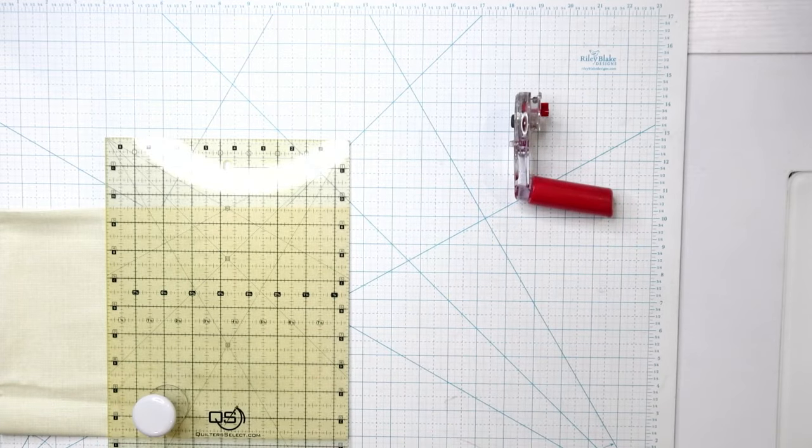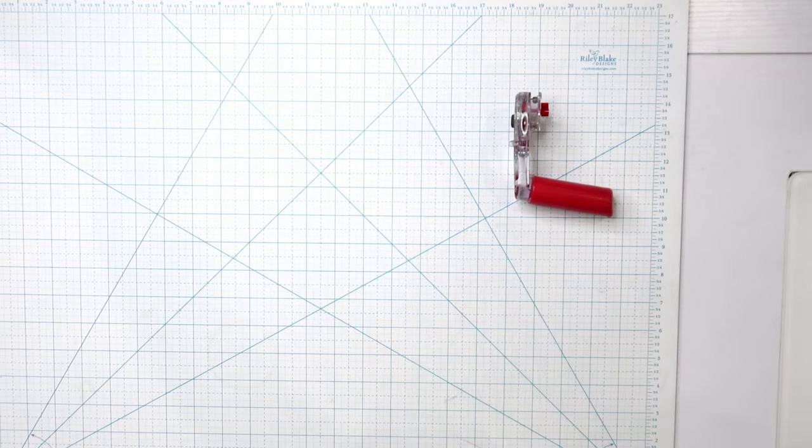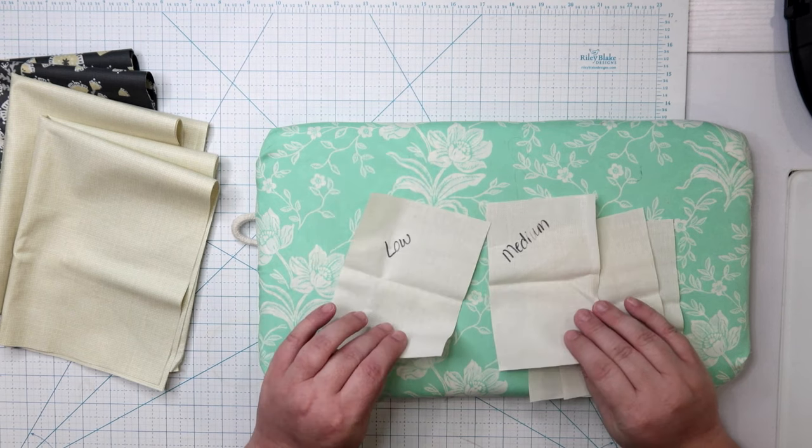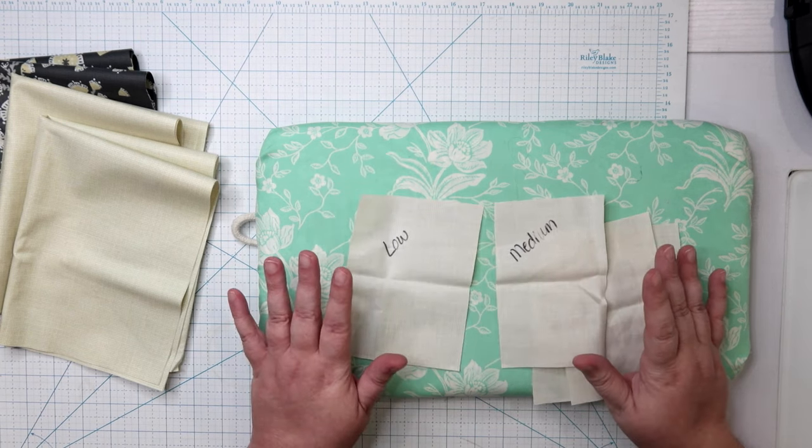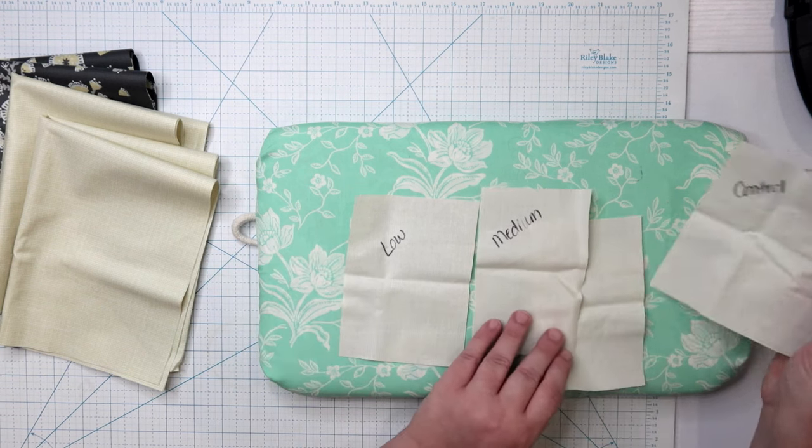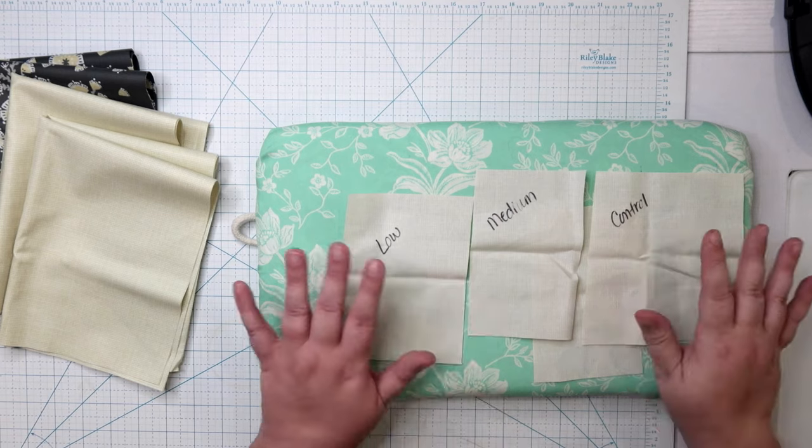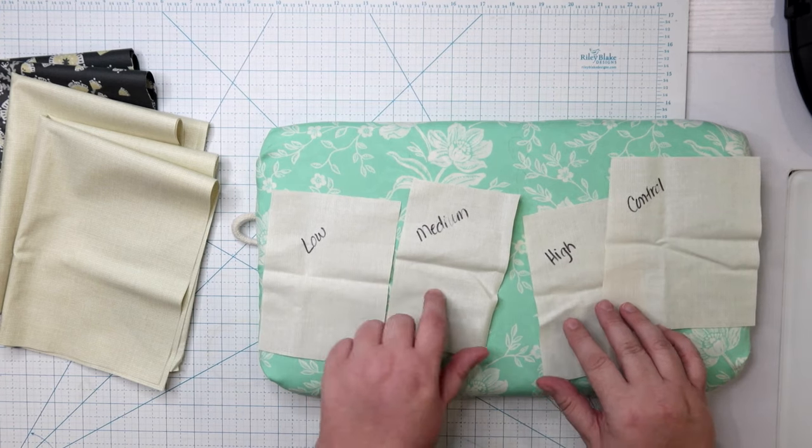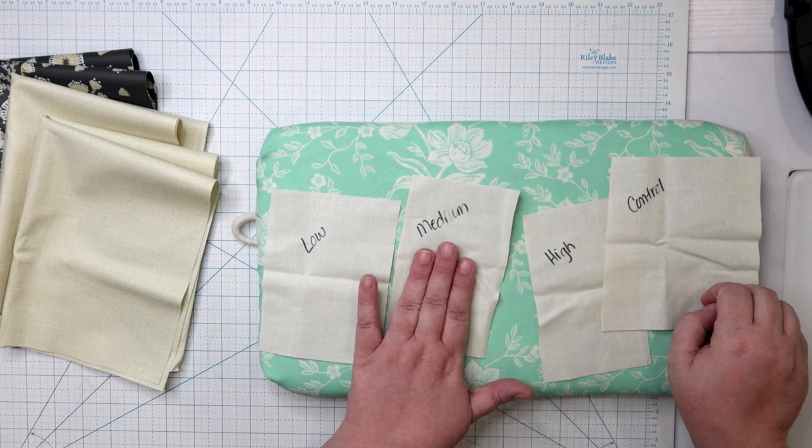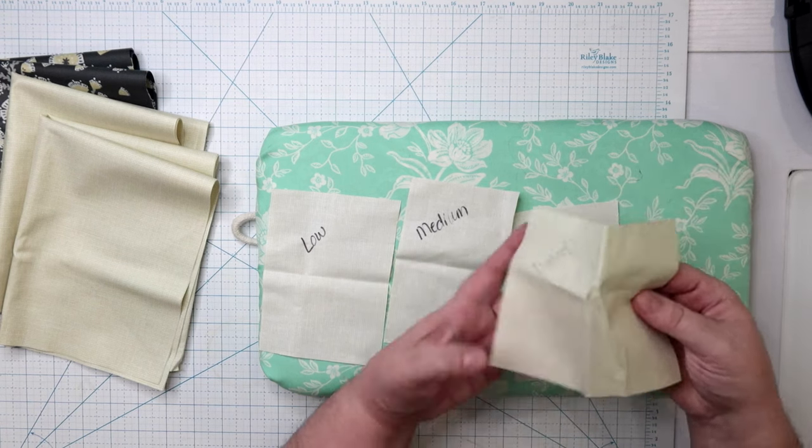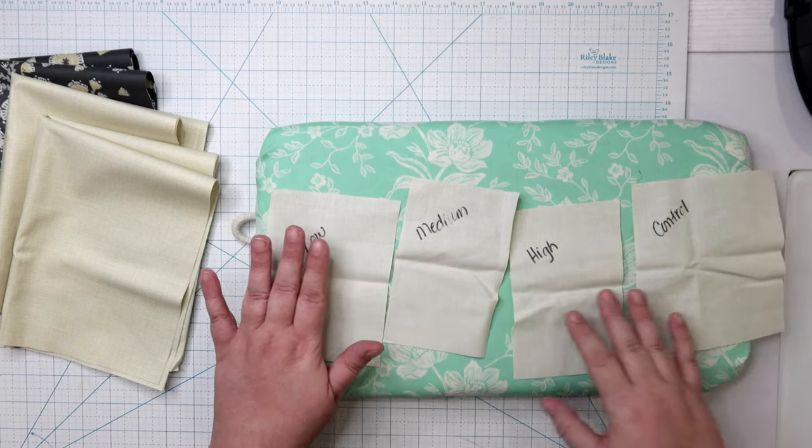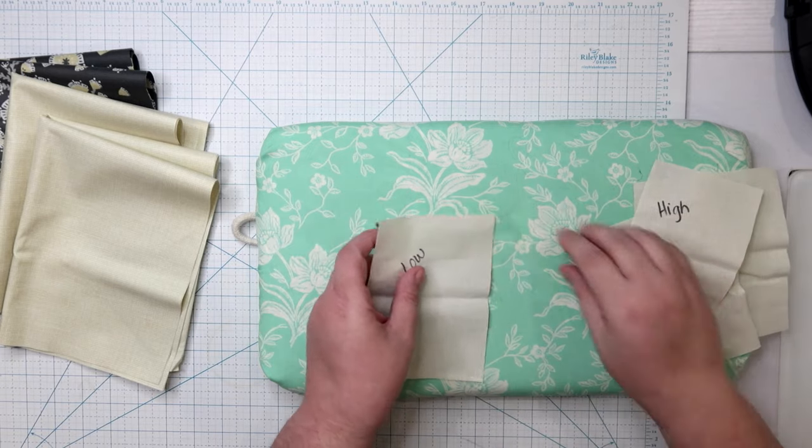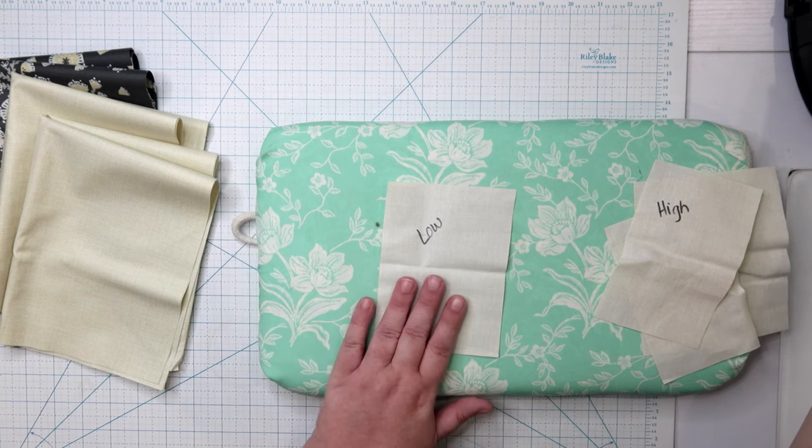And before we go any further with the tutorial, I want to do a couple of tests to see how this laminated cotton holds up to pressing and sewing. One of the things that makes me most nervous about this laminated cotton is what's going to happen when I iron it. So I have a bit of scrap left over from the cream fabric, and I just want to go through an iron test with you. I've cut off four different pieces and I've used a sharpie to label each of those fabrics. Low setting, medium setting, high setting, and I have a control. This is the piece that I'm not going to do any ironing to. What I want to do is just press each of these with the different heats of my iron to see how they hold up.